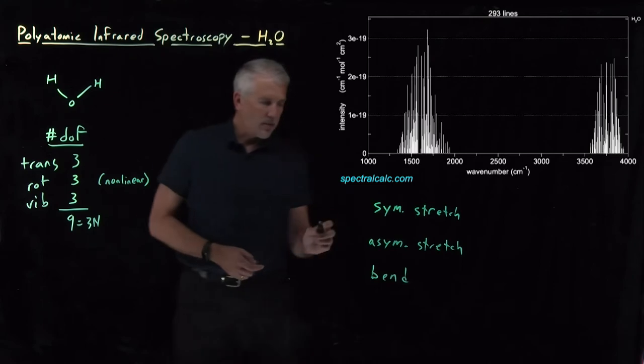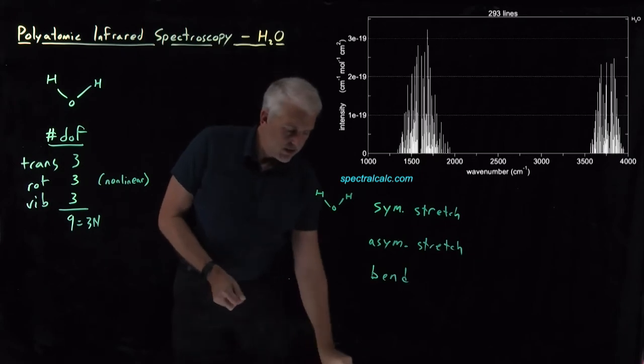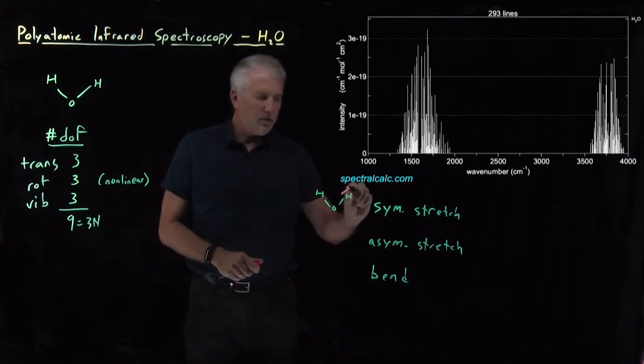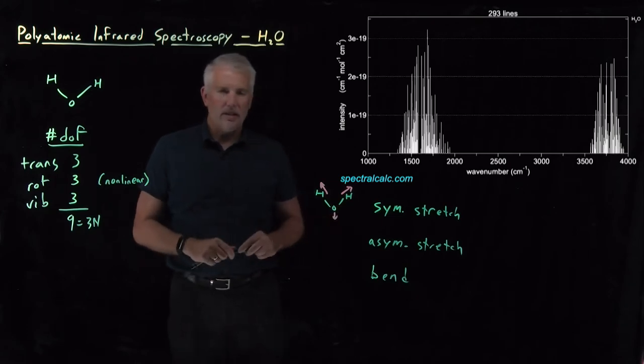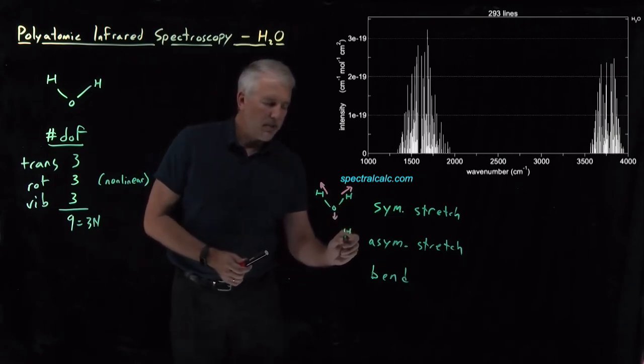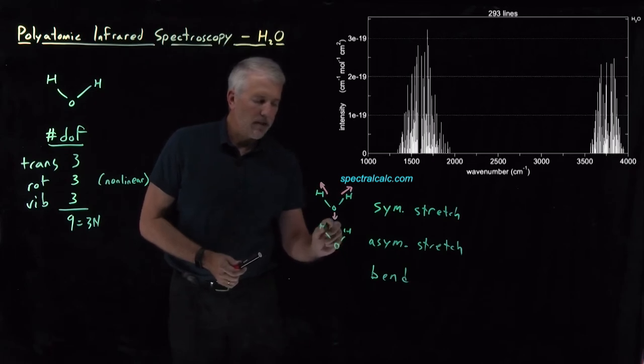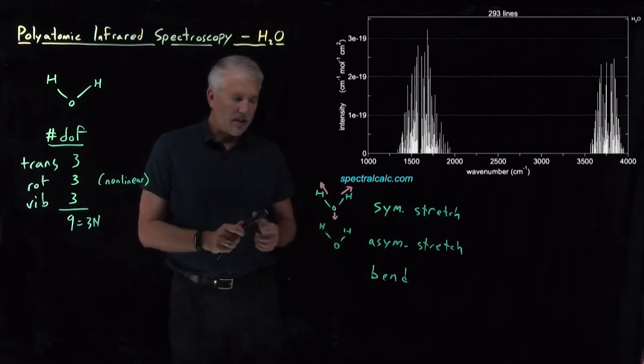If we draw cartoons of what these look like, the symmetric stretch involves lengthening the two OH bonds at the same time. The oxygen will have to move down slightly to keep the center of mass where it is. The asymmetric stretch is going to involve lengthening one of them and shortening the other.